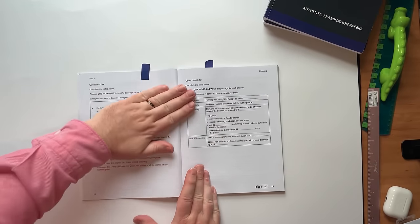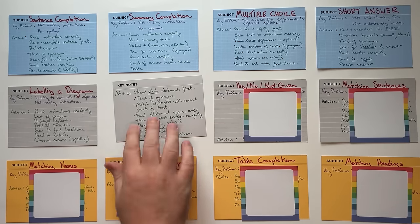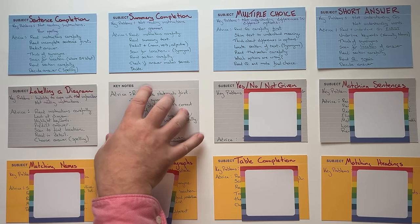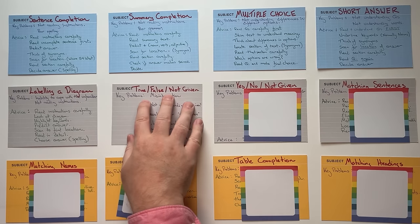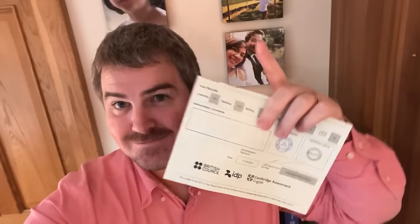I'm going to show you exactly what those questions look like, go over the key problems that students face, and then help you solve all of those problems and simplify everything by giving you the same step-by-step strategies that have helped thousands of my students get a 7, 8, and even 9. These are the exact same strategies that helped me get a band 9 when I did the test myself.